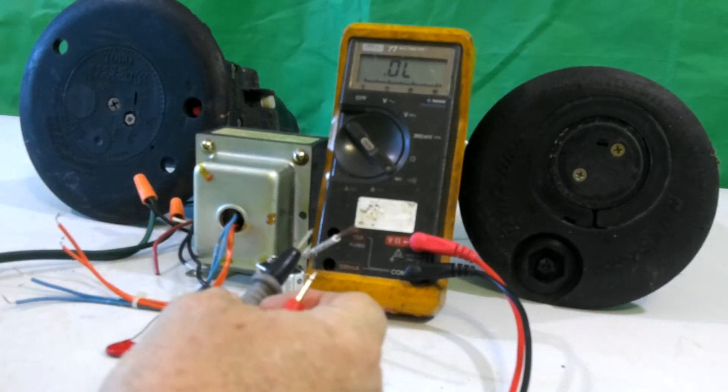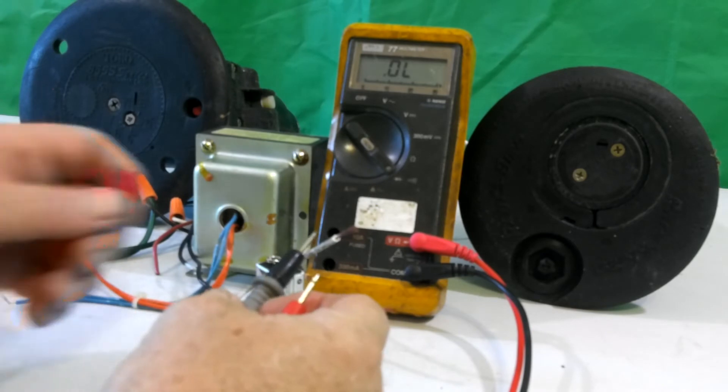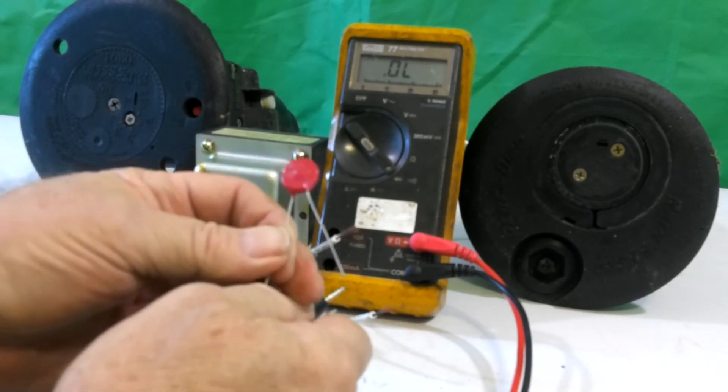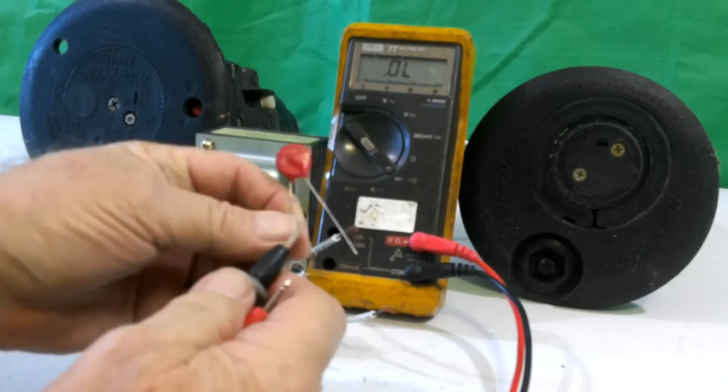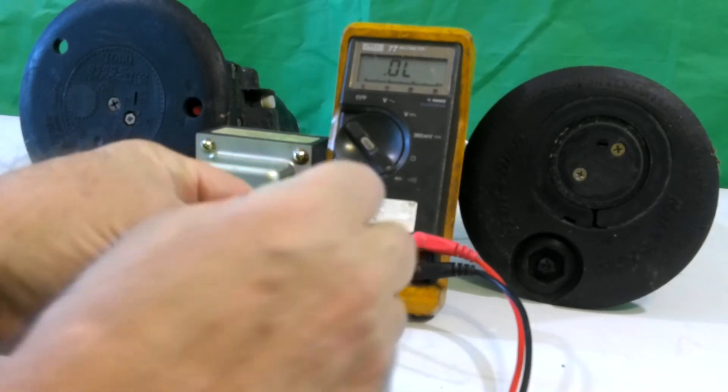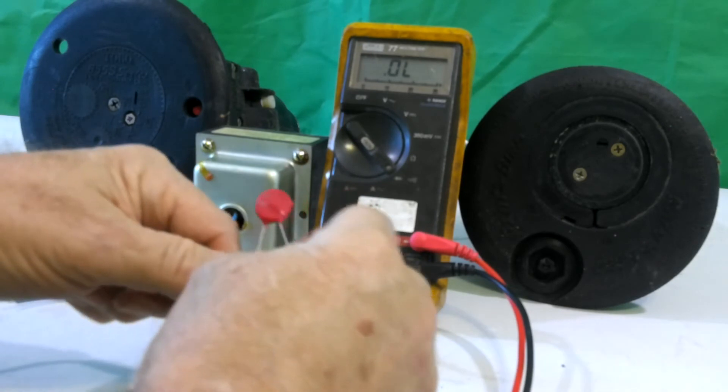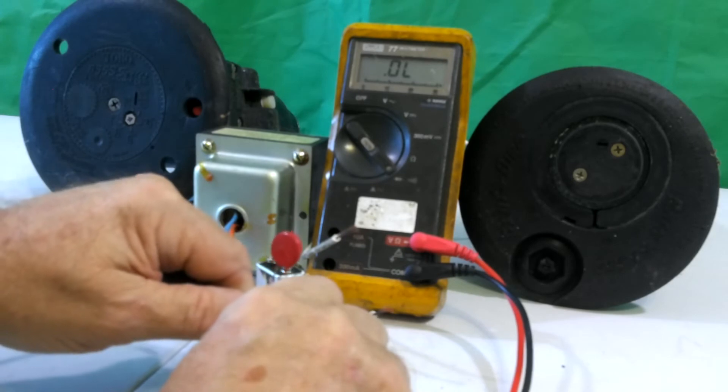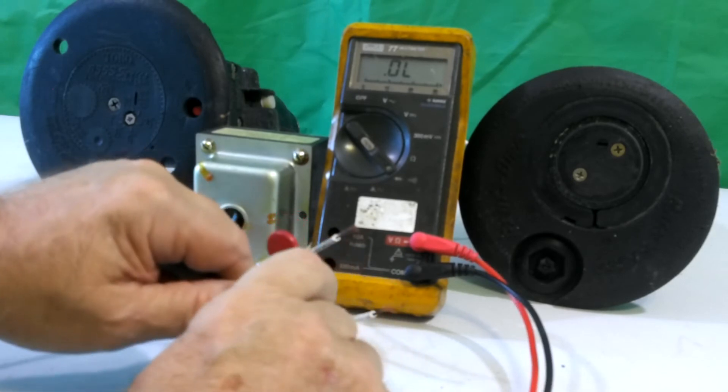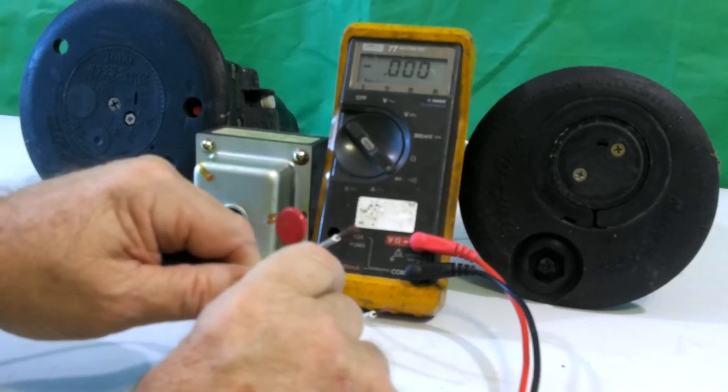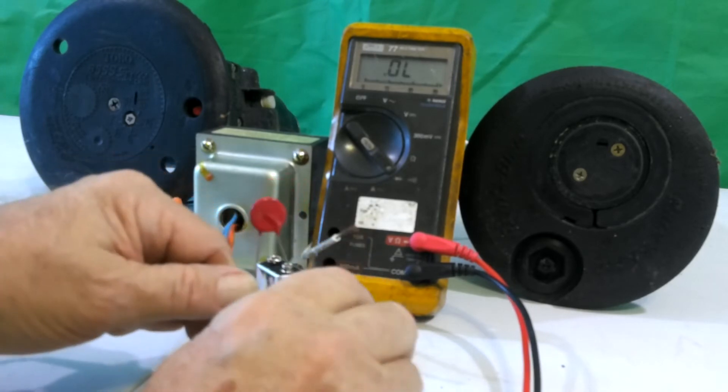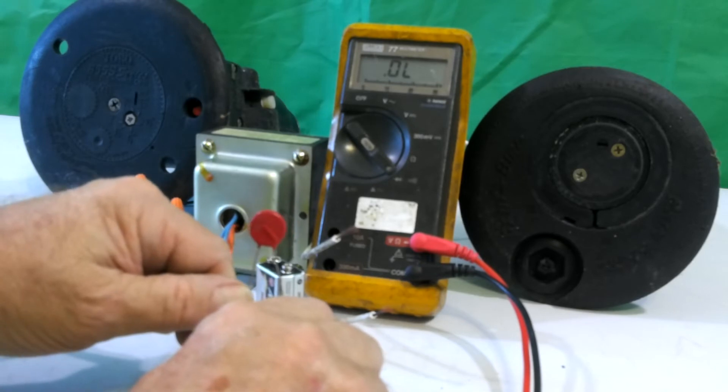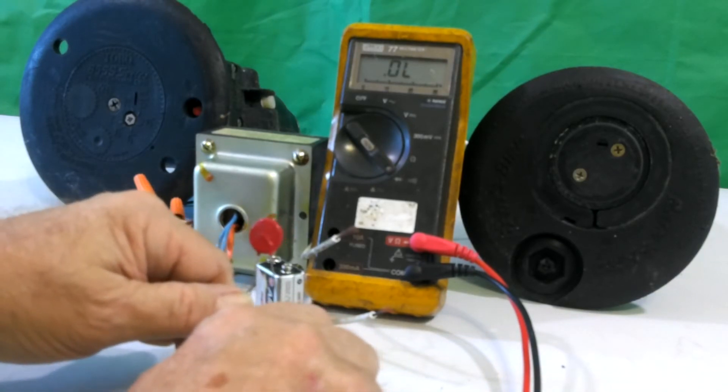The next thing I can test is a lightning protection device called a metal oxide varistor, or MOB or MOV. To do that, again in continuity, we put one probe on one leg, another probe on another leg. You'll notice there is no reading. If I had a reading showing a direct short, it means that this metal oxide varistor is shorted out and that whatever that's connected to is probably not working because it shorted the ground. That's how we would test for that.